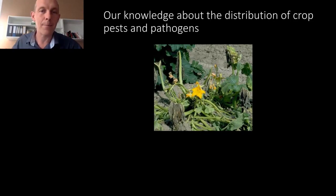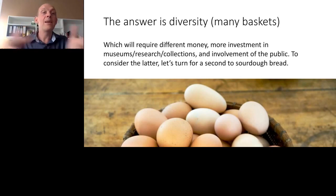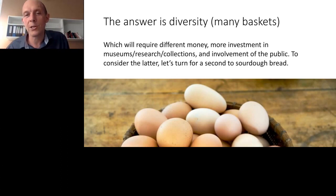What do we do about this? The answer is knowledge — we have to figure out enough about all the species that attack our crops and the species that can save us. We have to have diversity in many baskets. All of this will require different money, more investment in museums, research collections, and involvement of the public. To consider that latter piece, let's turn now to sourdough bread.